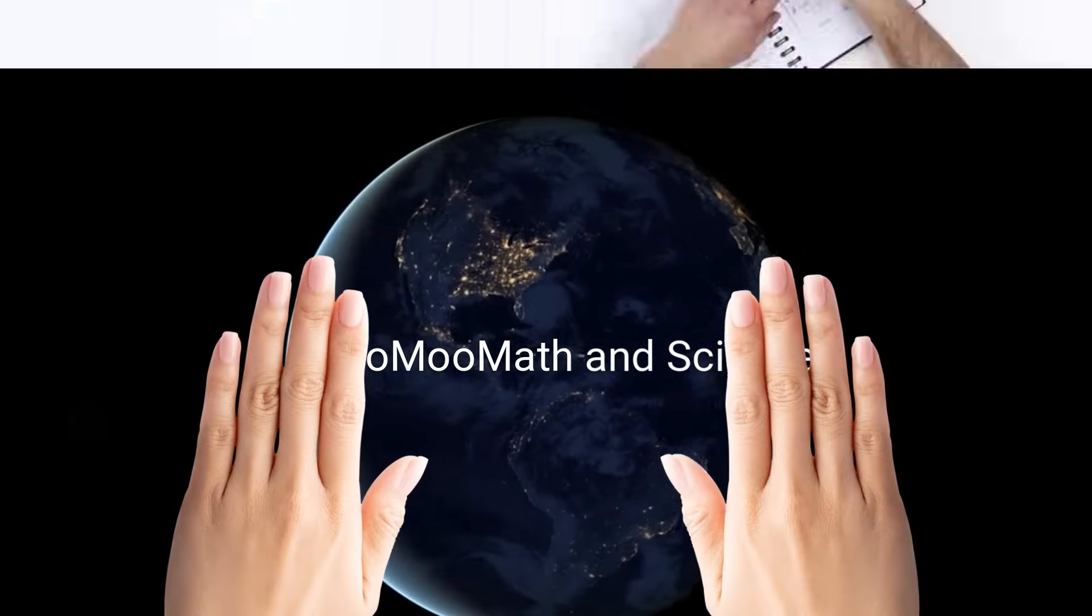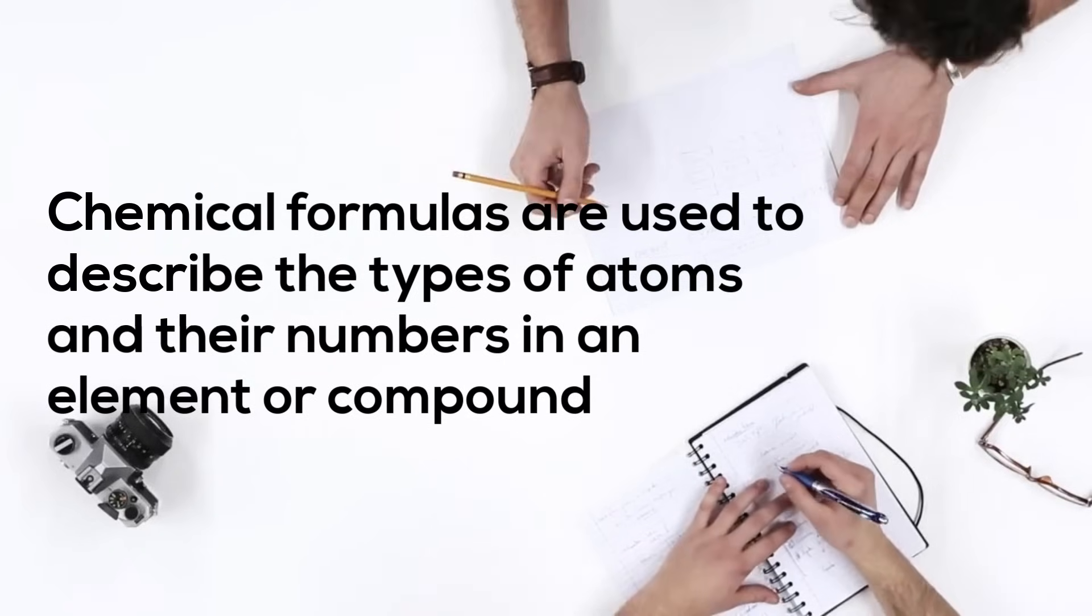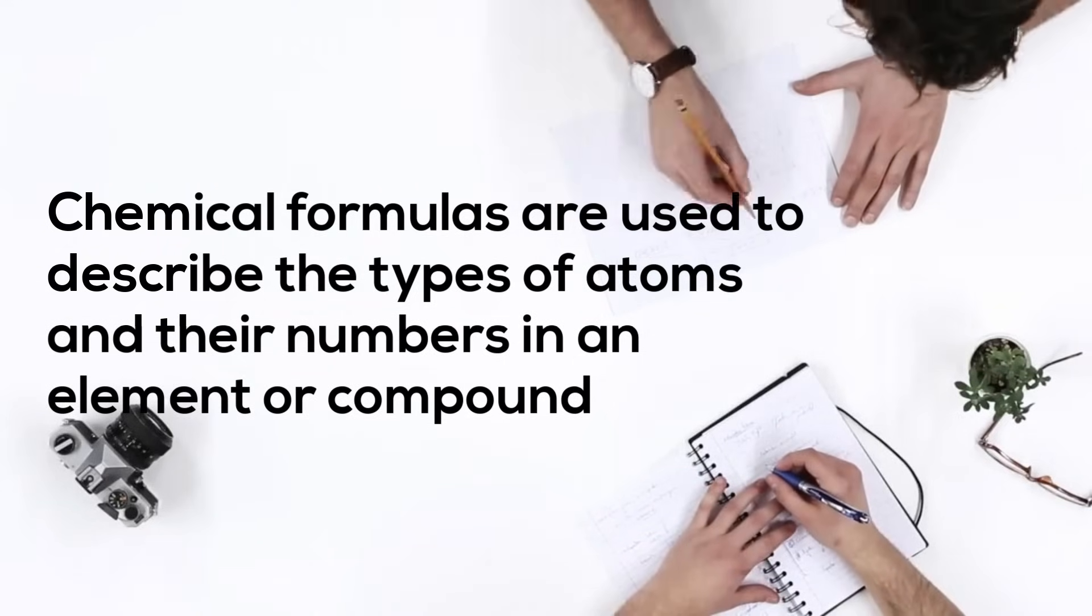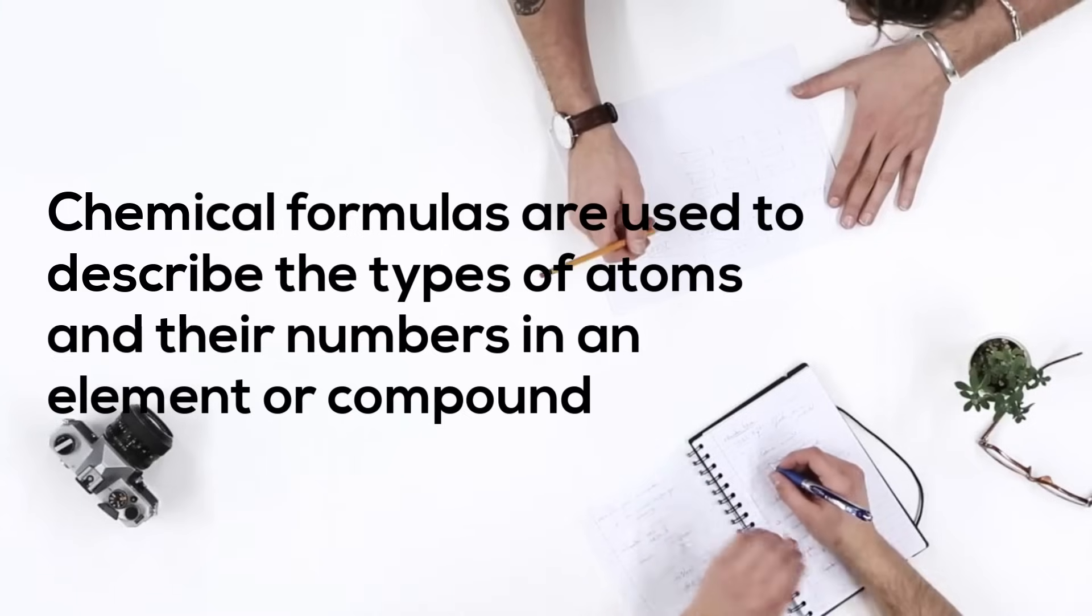Chemical formulas describe the types of atoms and the numbers in an element or a compound. Let's take a look at a chemical formula.